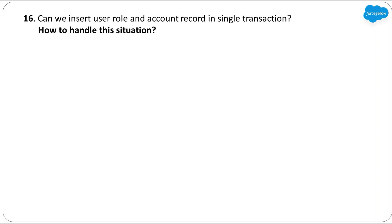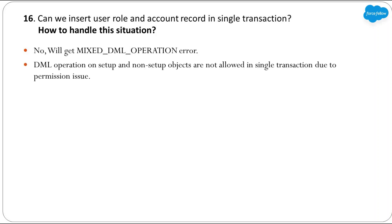Next: can we insert a User Role and an Account record in a single transaction? The answer is no — you'll get a Mixed DML Operation error. The reason is that performing DML on setup objects and non-setup objects in the same transaction is not allowed in Salesforce. Some objects affect the user's access to records. For example, if we remove a permission set assignment in the same transaction as updating an Account, Salesforce can't manage the security properly because technically after removing the permission set the user might not be allowed to update the Account.